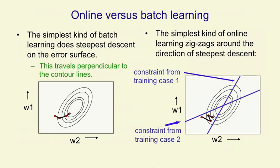That's what happens with what's called batch learning, where we get the gradient summed over all training cases. But we could also do online learning, where after each training case, we change the weights in proportion to the gradient for that single training case. That's much more like what we do in perceptrons. And as you can see, the change in the weights moves us towards one of these constraint planes.